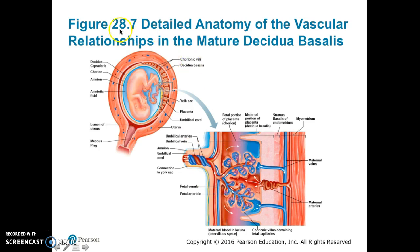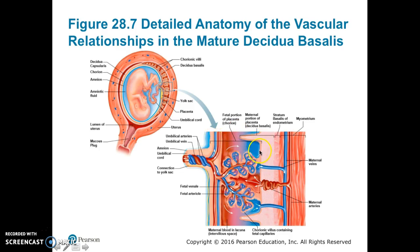Figure 28.7 details the anatomy of the vascular relationships in a mature decidua basalis. We can see how the fetus is oriented with the implantation on one side, and a region has been zoomed in on. The umbilical cord contains the umbilical arteries and the umbilical vein. These go into the chorionic villi, which make up the fetal portion of the placenta — the chorion. You can see a fetal venule and arteriole making up each chorionic villus. The non-fetal, maternal portion of the placenta — the decidua basalis — is here.